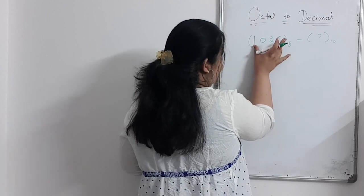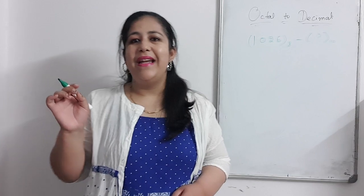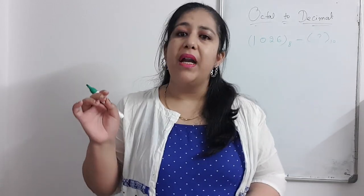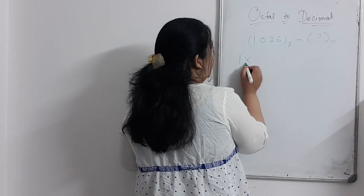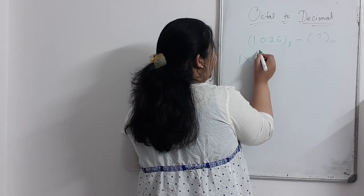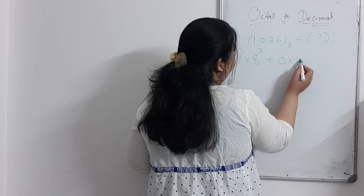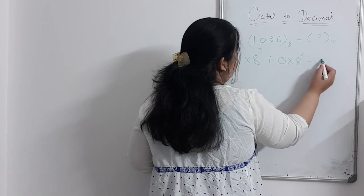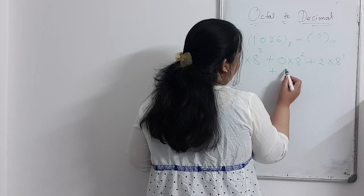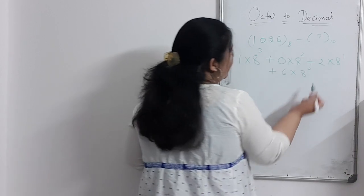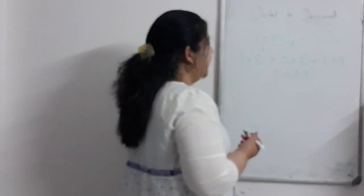This number has 4 digits. When we have 4 digits, we multiply the first digit by 8 raised to the power 3. So this becomes: 1 multiplied by 8 raised to the power 3, plus 0 multiplied by 8 raised to the power 2, plus 2 multiplied by 8 raised to the power 1, plus 6 multiplied by 8 raised to the power 0.